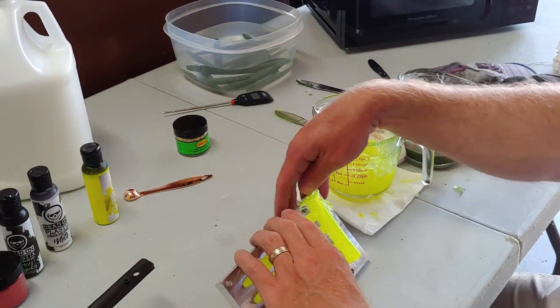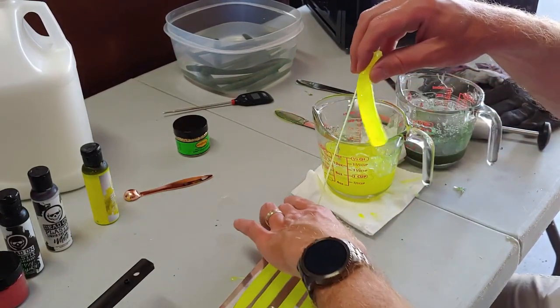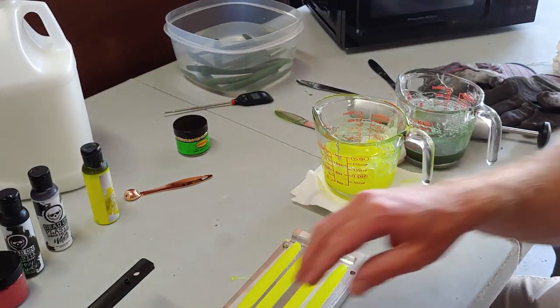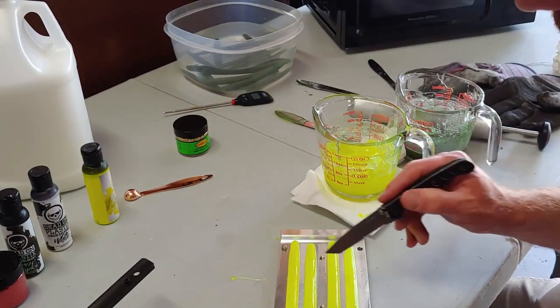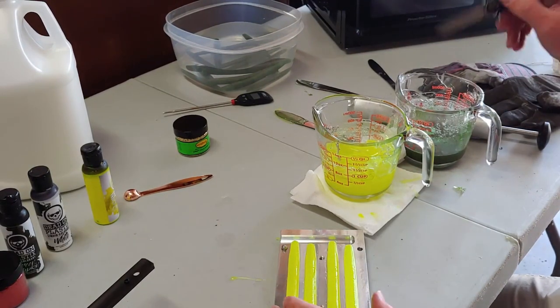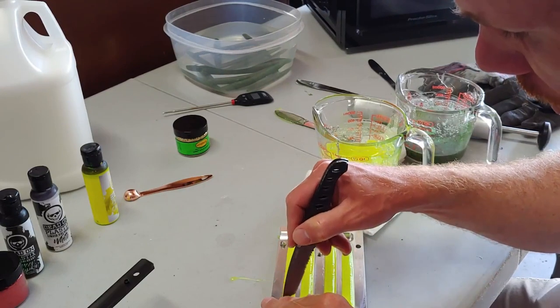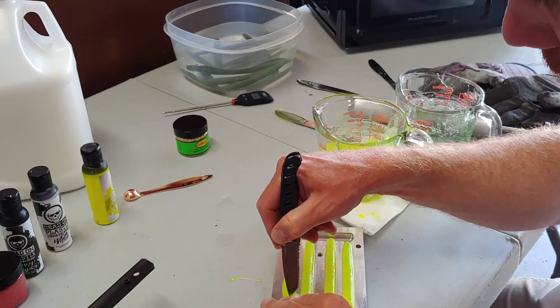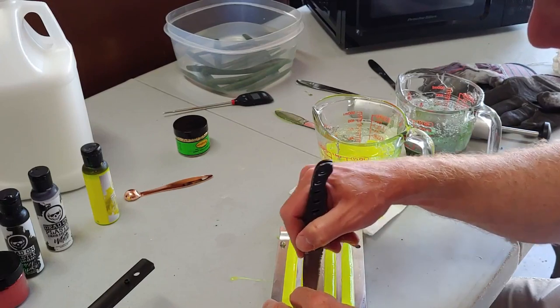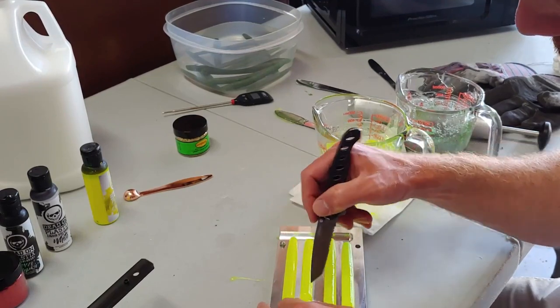One of my favorite stickworms to throw is a Yum Dinger green pumpkin with a chartreuse tail. So I am actually going to cut these down to just the tail and I'm going to pour the rest of the green pumpkin red flake in it, and then we'll see if that turns out. Obviously I'm really super new to this and probably not good at it, probably not good enough to try something advanced, but I'm going to try it anyway just because I want to.